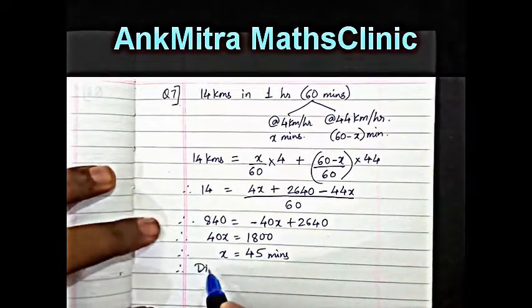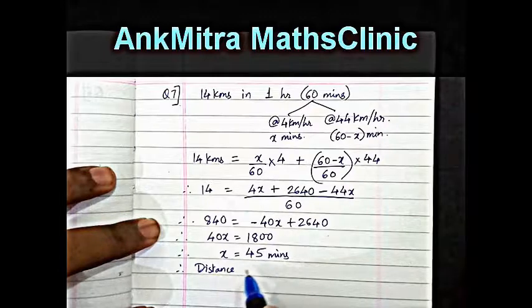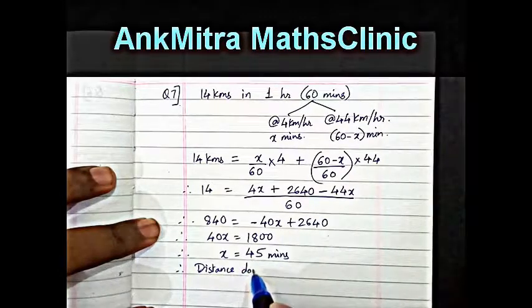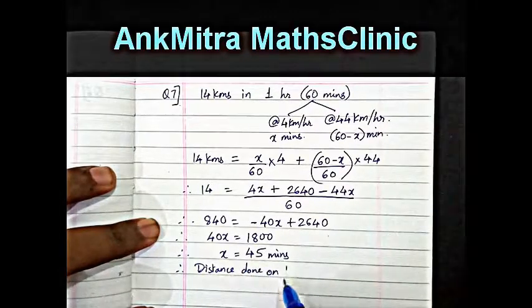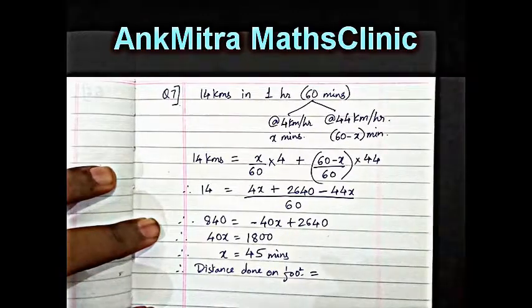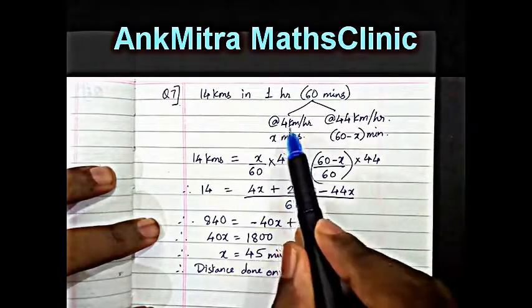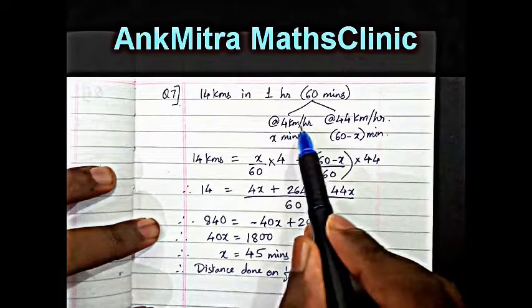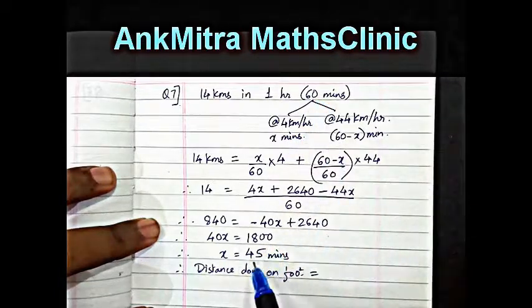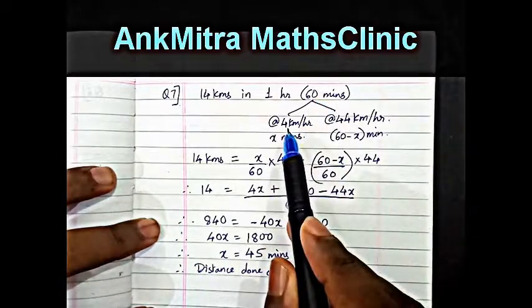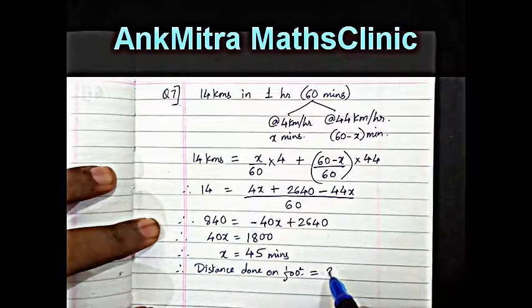Distance done on foot is equal to 4 kilometers in 1 hour, that is 4 kilometers in 60 minutes. Therefore, in 45 minutes, he will be doing 3 fourths of this distance, that is 3 kilometers.